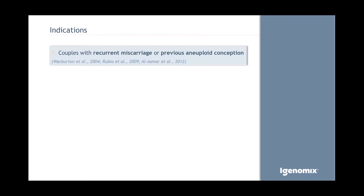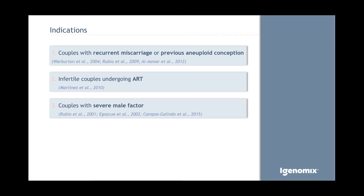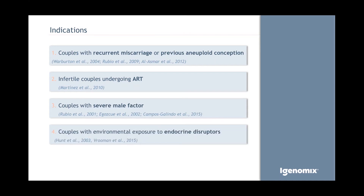Indications for performing a POC analysis include: couples with recurrent miscarriage or previous aneuploid conception, who have higher probabilities of another abnormal POC result; infertile couples undergoing ART, where up to 60% will have chromosomal abnormalities; couples with severe male factor infertility — those with severe oligospermia under 2 million sperm per milliliter have higher chances of abnormal embryos leading to first-trimester miscarriage; and couples with environmental exposure to endocrine disruptors, which increases miscarriage risk due to chromosomal abnormalities.